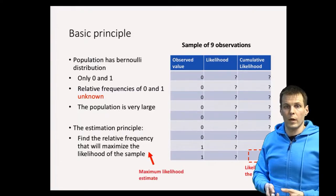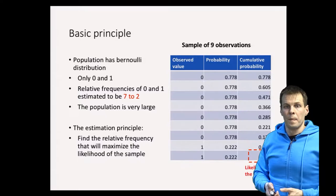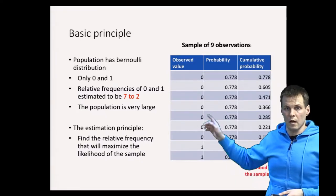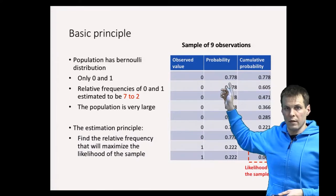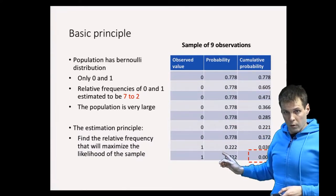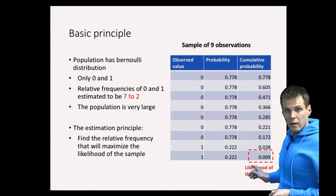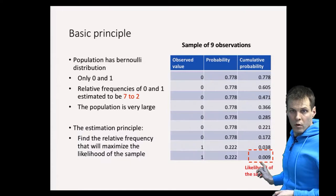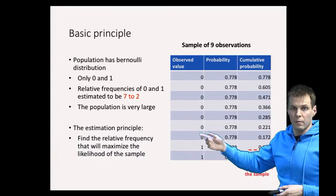For example, we could guess that the ratio is 2 to 7, which gives us probabilities of 78 percent and 22 percent for zeros and ones. We calculate the cumulative probabilities by multiplying everything together, and this is the likelihood of the sample given our estimated population.